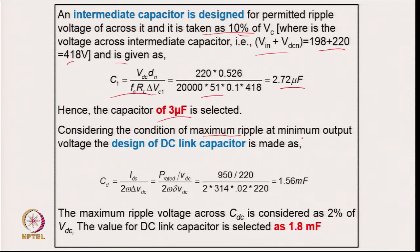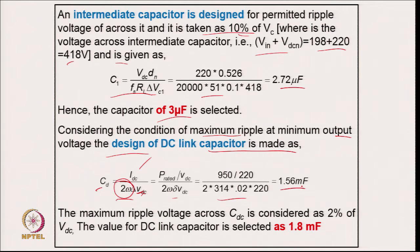Considering maximum ripple at minimum voltage, the DC link capacitor design uses C_d = I_dc / (2 × ω × ΔV_dc), which depends on load current, output voltage ripple, and the second harmonic of supply frequency. Putting in values gives 1.56 mF. The maximum ripple voltage across C_dc is considered 2 percent, so the selected value is 1.8 mF.